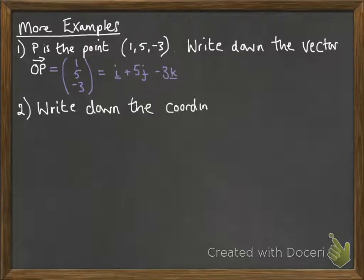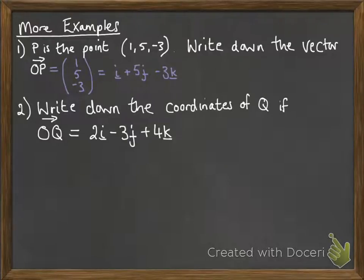Next, write down the coordinates of Q if OQ is equal to this vector here. Again, very straightforward, just take those numbers from that vector, so Q has to be at 2, minus 3, 4.